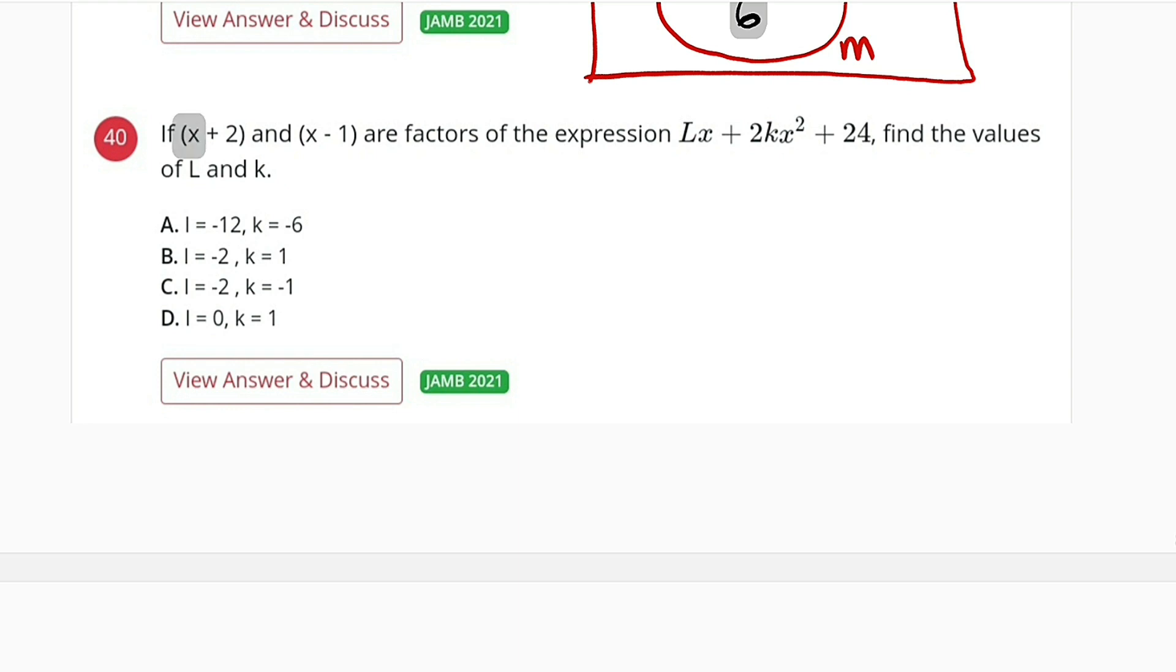It stated that if x plus 2 and x minus 1 are factors of this expression, Lx plus 2kx squared plus 24, we are asked to find the value of L and k.